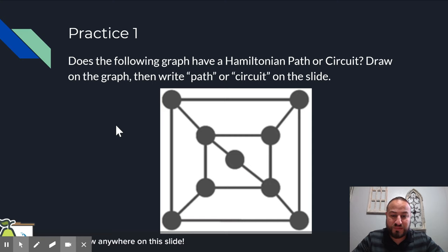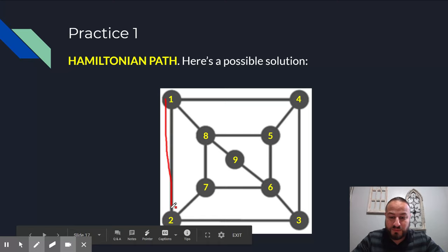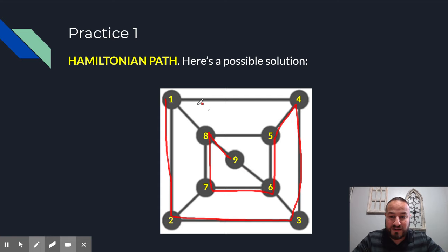Here's one that I came up with. I started it here at one. I went all the way around basically five, six, seven, eight, nine. Notice how I started at the top left. I ended in the middle. This is only one solution. But because I don't start and end at the same vertex, it's just a path as a Hamiltonian path. And in fact, there is no circuit on this particular problem. There's no way for you to start and end at the same vertex. So it is just a Hamiltonian path on this problem.